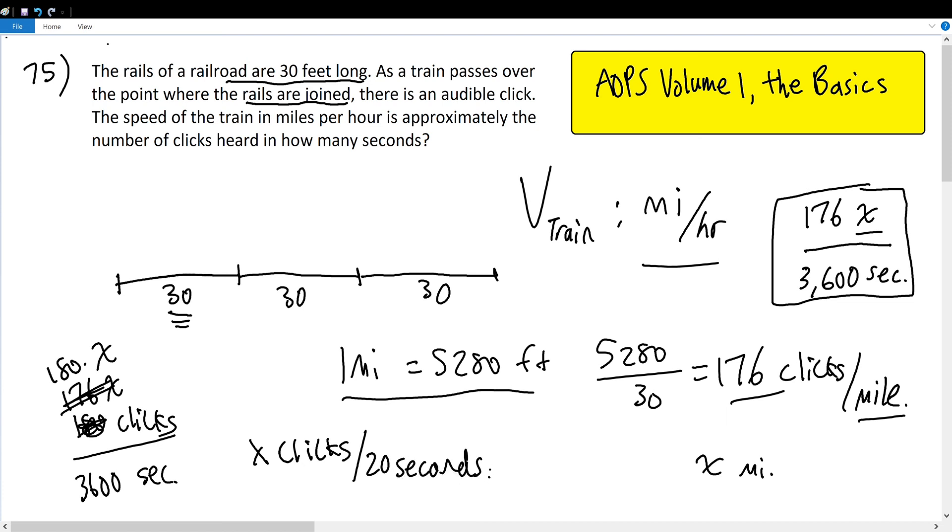So this means that in 20 seconds there will be approximately the speed in miles per hour of the train. And that is our solution to the question, which is 20 seconds. Because it's asking, the speed of a train in miles per hour is approximately the number of clicks heard in how many seconds?